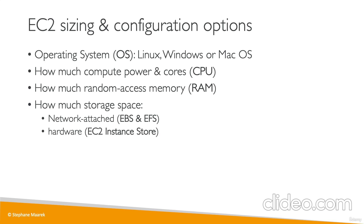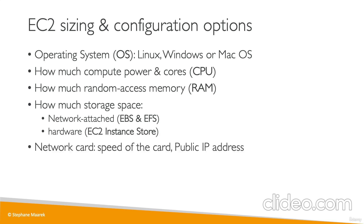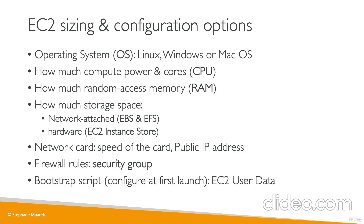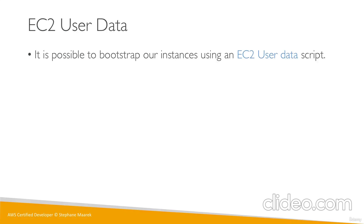You also choose the type of network attached to your EC2 instance — do you want a fast network card, and what kind of public IP? You need to handle the firewall rules via the security group. Finally, there's the bootstrap script to configure the instance at first launch, called the EC2 user data. You can choose pretty much how you want your virtual machine to be, and you can rent it from AWS in the blink of an eye. It is possible to bootstrap our instances using the EC2 user data script.